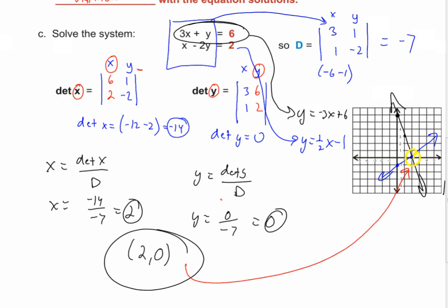There are four ways of solving systems: graphing (just showed it), substitution, elimination, and matrices. We just did two of the four methods right there — all four will give you the same answer.